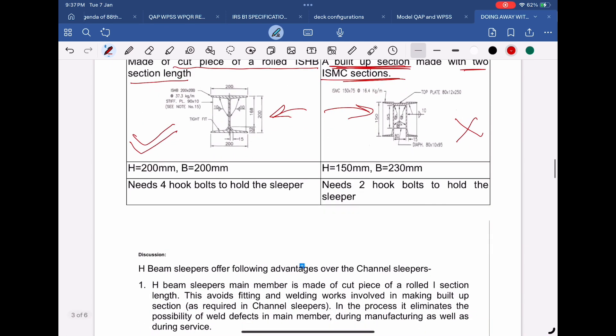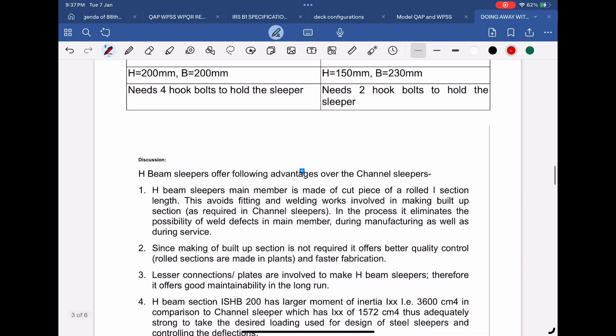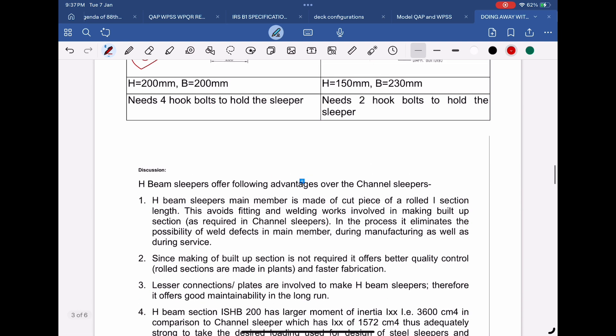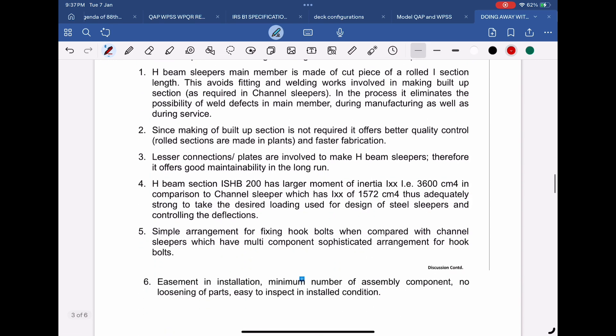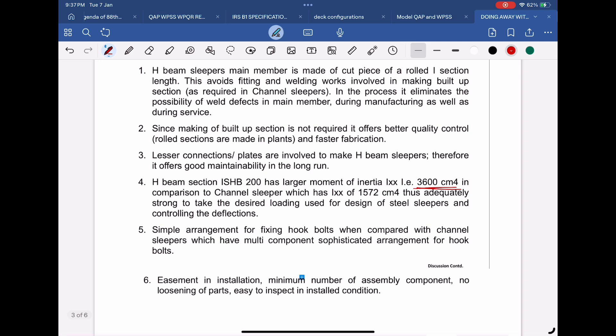Since making a built-up section is not required, it offers better quality and faster fabrication. Lesser connections and plates are involved to make H-beam sleepers, therefore it offers good maintainability in the long run. H-beam section ISHB 200 has larger moment of inertia, 3600, in comparison to channel sleeper which has moment of inertia of 1572, thus adequately strong to take the desired loading used for design of steel sleepers and controlling the deflections.